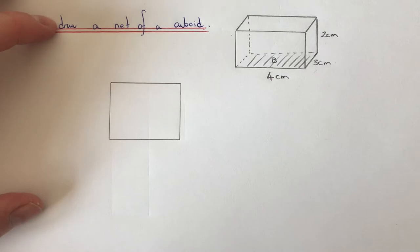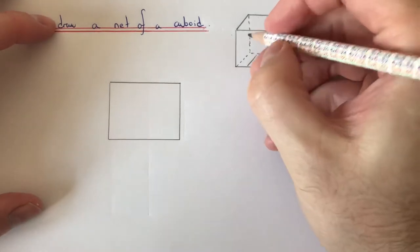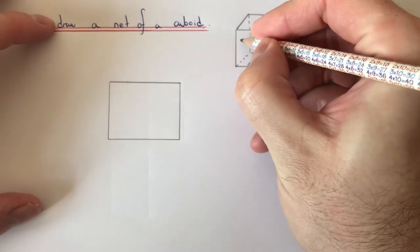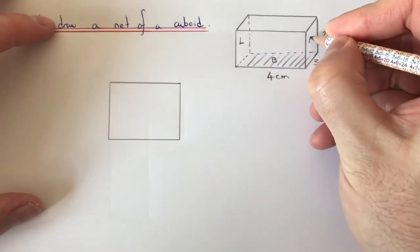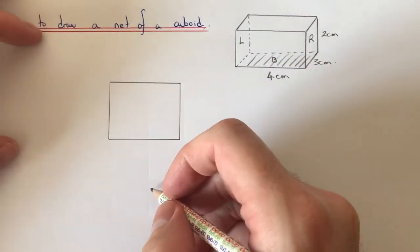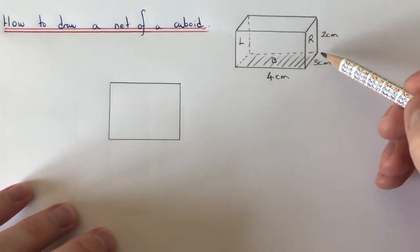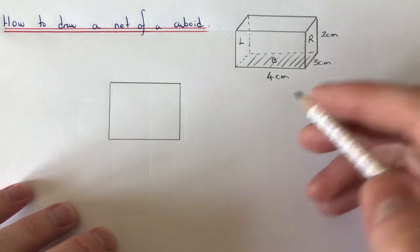So next then we want to do the sides of the box. So let's do the left hand side and the right hand side of the box. So the left hand side and the right hand side is a three by two centimeters rectangle.